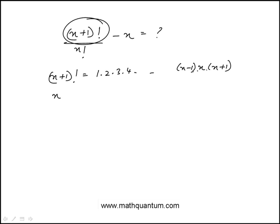n factorial would be 1, 2, 3, 4, all the way to n. And you notice that the only difference between n plus 1 factorial and n factorial is this extra term.